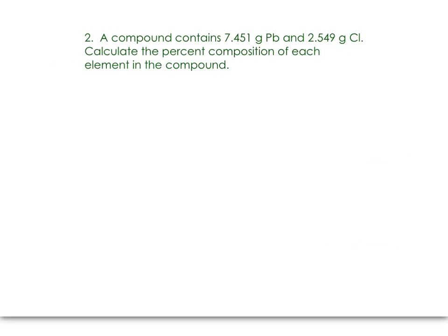Here we have 7.451 grams of lead and 2.549 grams of chlorine. We want to calculate the percent composition of each element in the compound. We have just straight masses to work with here. So we have the mass of each element. All we would need would be the mass of the compound, and then we could calculate our percent composition. So 7.451 grams plus 2.549 grams is 10 grams. That's the total mass for the compound.